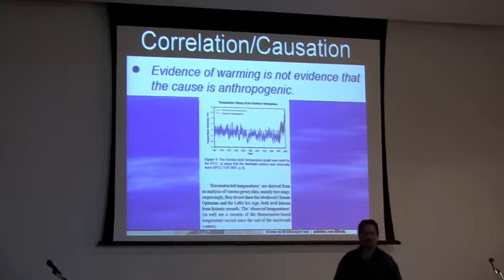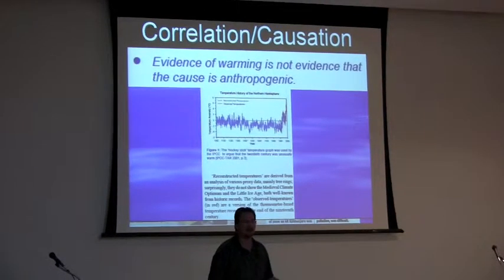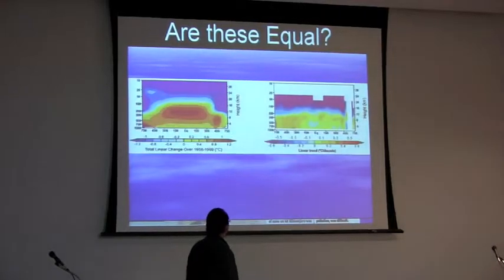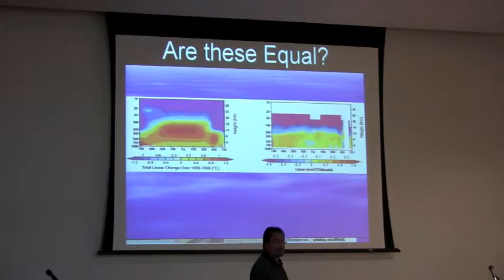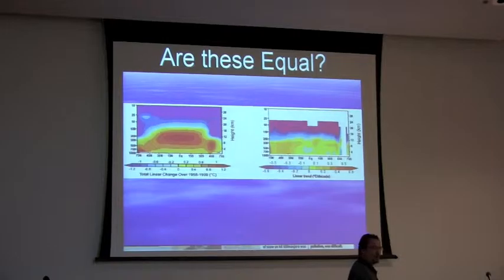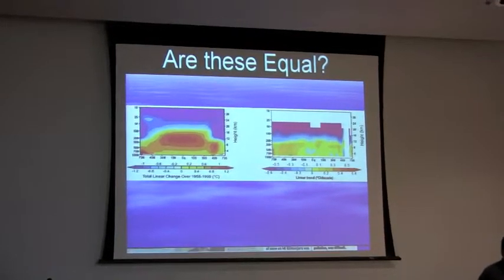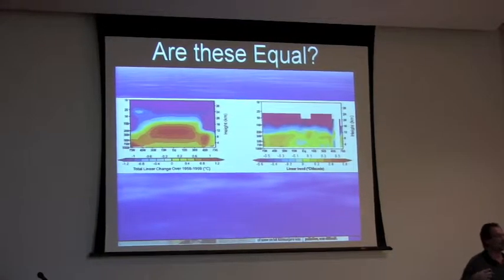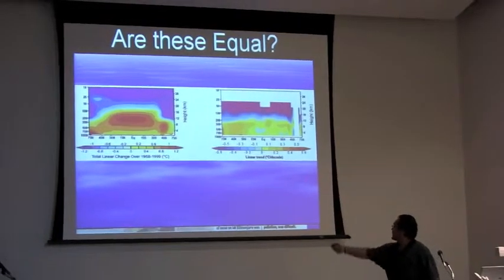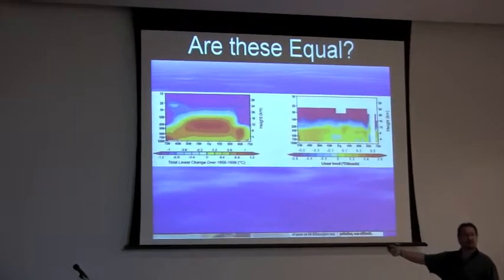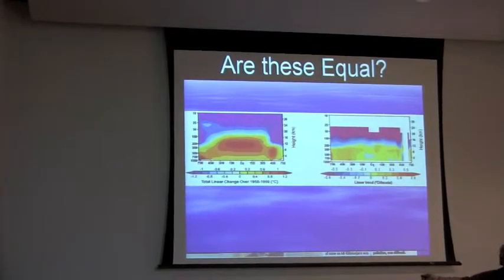The first point Dr. Singer makes is that evidence of warming is not evidence that man is causing it. We've been through many warming and cooling cycles — none of them were due to man. This cycle, more likely, is no different from any of the past. If there's global warming, you have to have what's called a fingerprint: warming of the atmosphere.